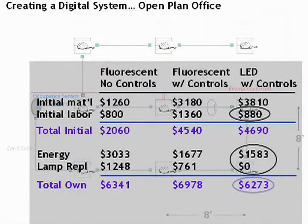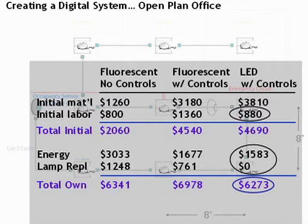So if you total all that up at the end, what you see is that all three systems end up coming out very close. The fluorescent system with no controls, in terms of total owning costs over a 15-year life cycle, is high because of the annual energy and lamp maintenance costs. The fluorescent with control system is higher because of the initial cost, but has improved operating costs. And then the LED with controls actually comes in very close to the fluorescent in terms of installed cost, but has a great benefit in terms of energy performance and lamp maintenance.